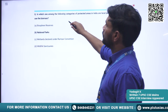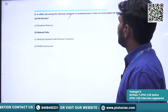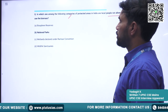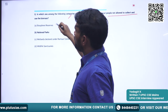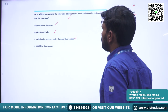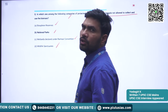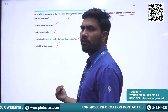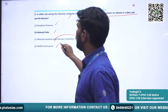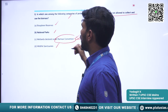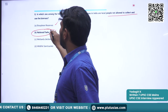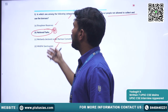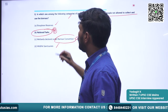Next important question: 'In which among the following categories of protected areas in India are local people not allowed to collect and use biomass?' Options: Biosphere Reserves, National Parks, Wetlands declared under Ramsar Convention, Wildlife Sanctuary. In Ramsar designated wetlands people are allowed to enter and collect biomass. When it comes to National Parks, these are strictly regulated and no human is allowed to enter and collect biomass. So the answer is B — National Parks.